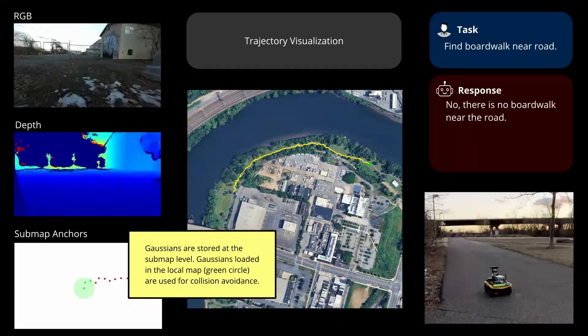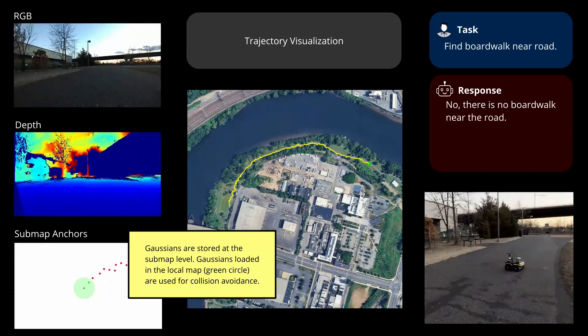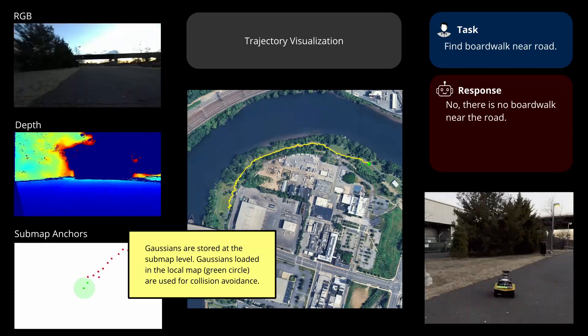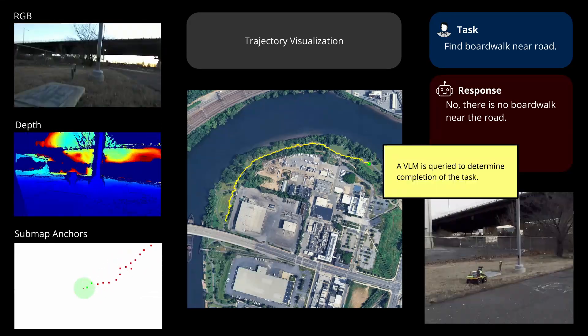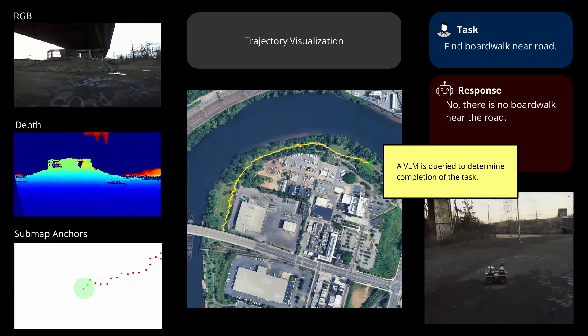Gaussians are stored at the sub-map level. Gaussians loaded in the local map are used for collision avoidance. A VLM is queried to determine completion of the task.